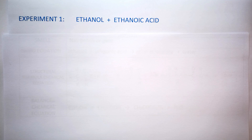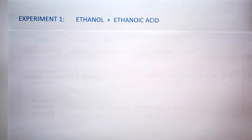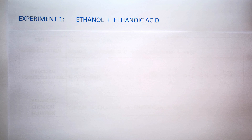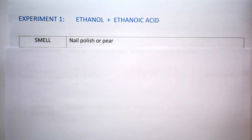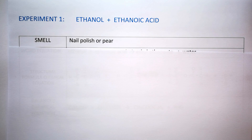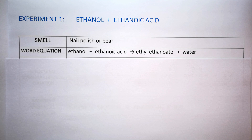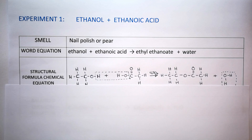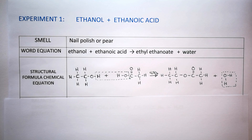The aim of this experiment is to manufacture esters and to identify the smell of each ester. You will most likely be given three experiments to do, but I'm going to go through four. The first one is ethanol reacting with ethanoic acid — ethanol is the alcohol and ethanoic acid is the carboxylic acid. The smell you will observe is nail polish, paint stripper, or pear drops. They can ask you the word equation, but they normally ask for the structural chemical equations.